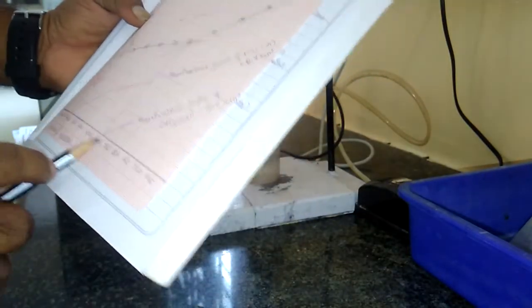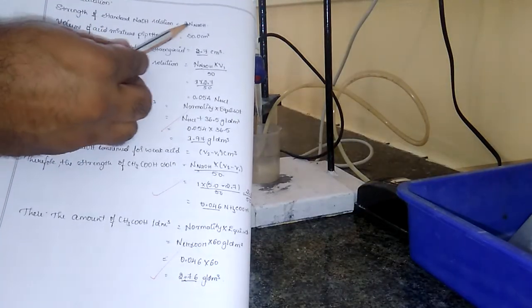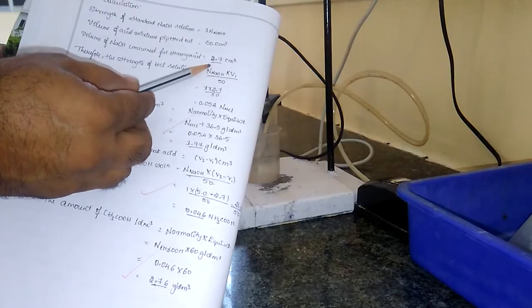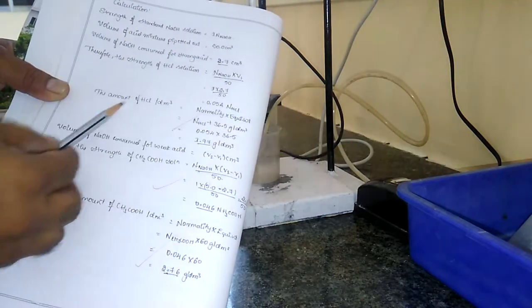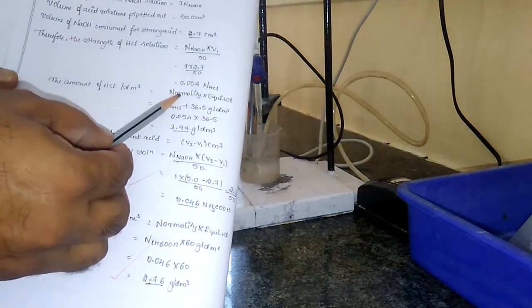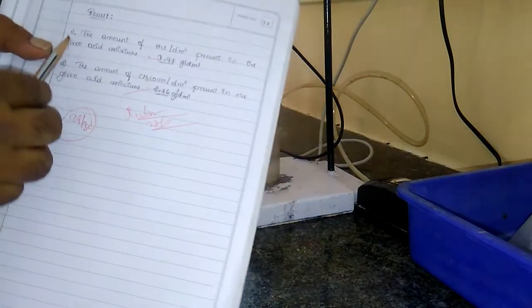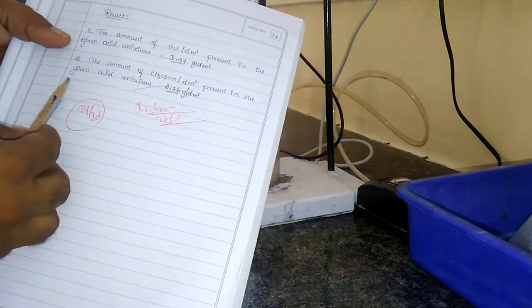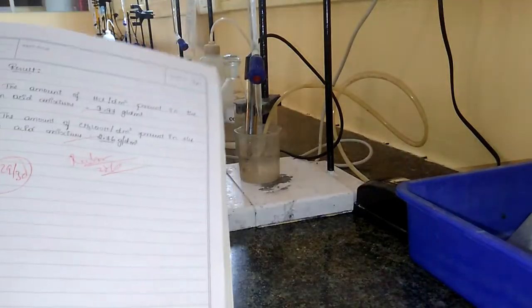Here, 2.6 ml is the equivalence point of hydrochloric acid and 5 ml is the equivalence point of acetic acid. This is about the calculation: the strength of the standard NaOH is one normal, and the volume of the acid mixture pipetted is 50 ml. The volume of NaOH consumed for the strong acid is 2.7 ml from the graph. The normality of HCl equals normality of NaOH multiplied by this volume divided by 50. From that normality you can calculate the amount of HCl. Similarly, calculate the acetic acid strength. The amount of HCl present in the given acid mixture is 1.97 g/dm³. The amount of acetic acid present in the given acid mixture is 2.76 g/dm³. This is how to calculate the amount of strong acid and weak acid conductometrically. Thank you.